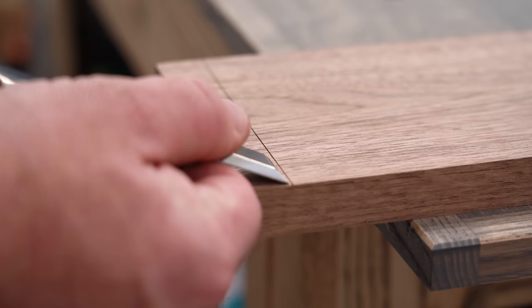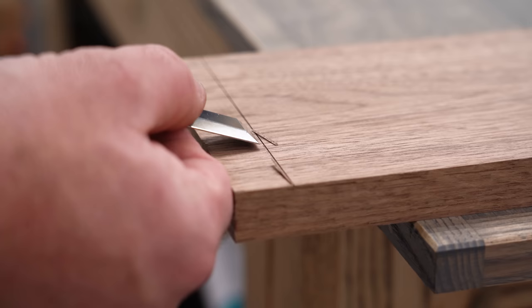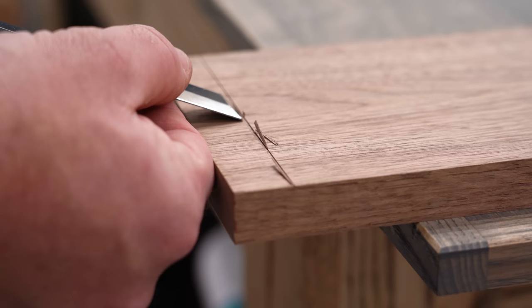This is one of those things that becomes very personal to each person's style. Chisel lines can benefit from several passes, meaning a deeper cut, so that a small square knife wall is established. This is also beneficial for establishing a saw reference line too.